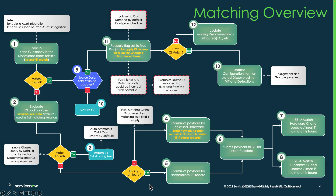The first thing is an overview of how matching works. We're using Tenable in this case. When we get the asset payload from the scanner, the first thing we're going to do is look in the discovered item table to see if we can find a match using the source ID. If we found a match, it's going to look for any field payload updates. If there are updates, then we're going to set a reapply flag on that discovered item so that you could potentially run CI lookup rules against it again, to make sure that the changes don't cause it to match to a different CI.